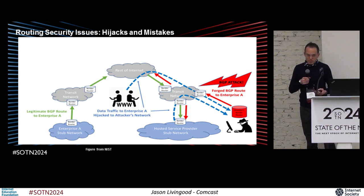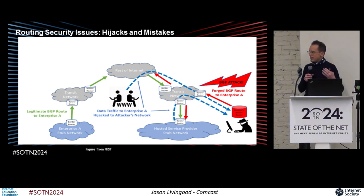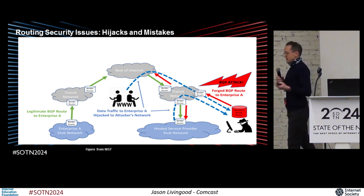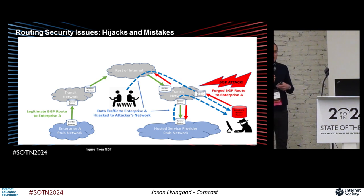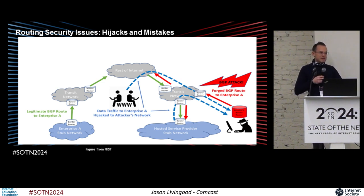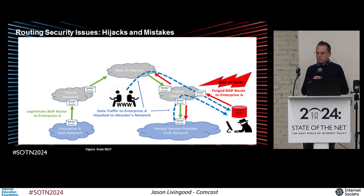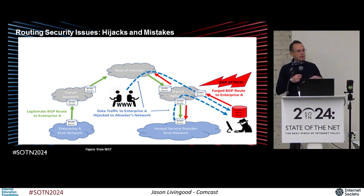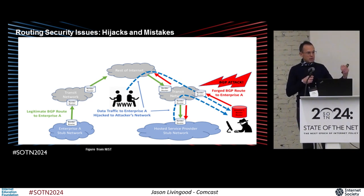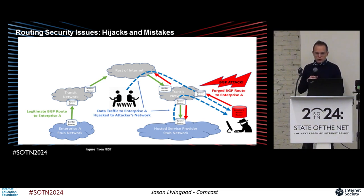There are two problems that come up with routing security. One is hijacking — something malicious and nefarious where you're trying to attack and take over a property on the internet. The other is mistakes. You might think attacks are causing the issue most of the time, but in fact most of the time it's just mistakes — people roll out and announce the wrong routing information and suddenly traffic is destined to the wrong place. It's also the case that malicious actors can announce false routing information and cause traffic to be destined to them, and that's a way to commit financial crimes and cyber attacks.